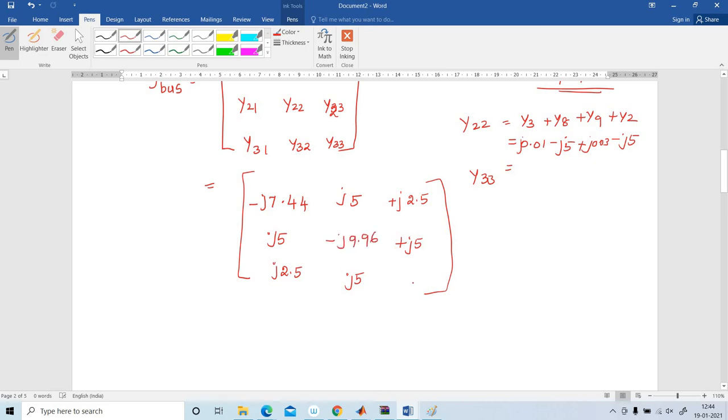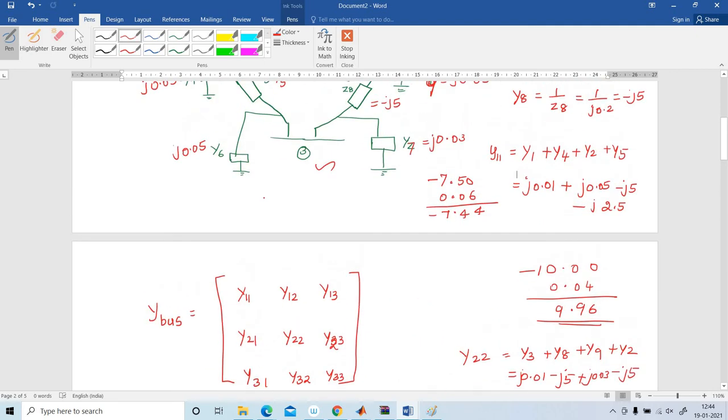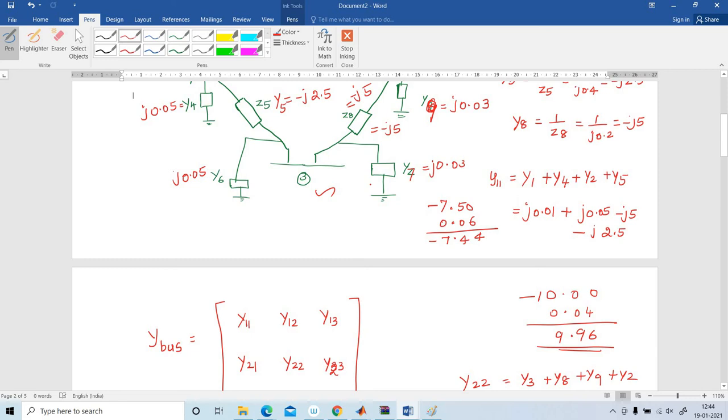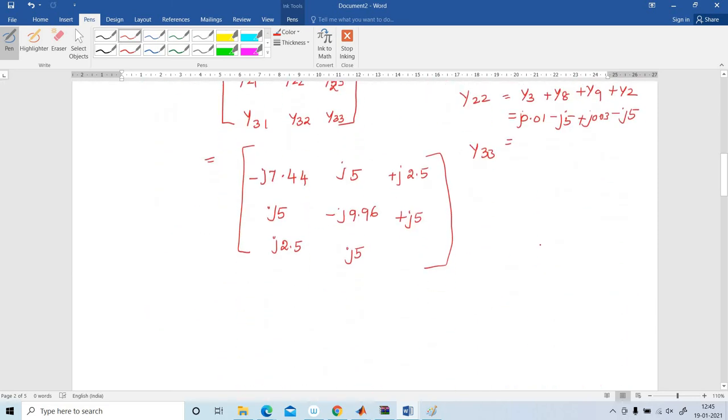In the similar manner, find out the third one also, Y33. The elements connected here are Y6, Y7, Y8 and Y5. Y6 is 0.05j, and Y7 is j0.03, Y8 minus j5, Y5 minus j2.5. So minus 7.5, here is 0.08, the answer is 2, here 4, minus 7.42. So the answer is minus j7.42.